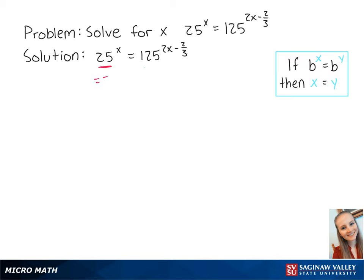25 equals 5 squared and 125 equals 5 cubed. So we can rewrite this as 5 squared to the x equals 5 cubed to the 2x minus 2 thirds.